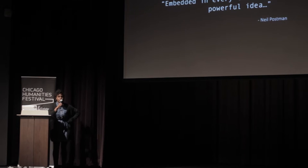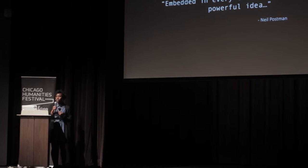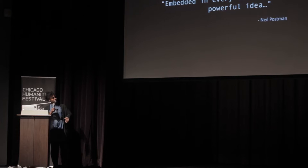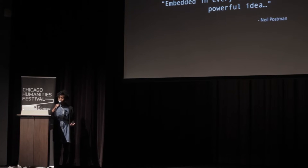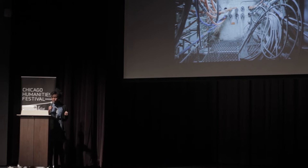Embedded in every technology there is a powerful idea. What Postman says is that this idea is so powerful that it's fundamental to actually understanding the technology, but it's so fundamental that we take it for granted. The example he uses is that in an oral culture you prioritize memory — you have to, because how else are you going to pass down stories? This also helps us understand why bards and poets in oral cultures are so highly regarded: they have this ability to remember these long poems. Then, in a writing-based culture, all of a sudden logical organization and structure become really important, because now you have the ability to step back and reflect on an argument from start to finish.